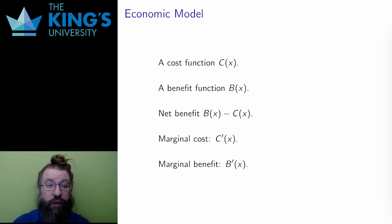The model here is the production of some good or service. X is the number of units being produced, usually measured in thousands or millions or some kind of group like that. There is a cost function, C of X. This is the cost of producing X units.